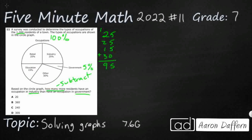So if I were doing this incorrectly, I would say industry is 25% and government is 5%, subtract to get 20% — and look, 20 is one of the answer choices. That's incorrect, though, because the answer is not in percentages, it's in real people. We could use that 20% — I'll show you how to do that in a moment.